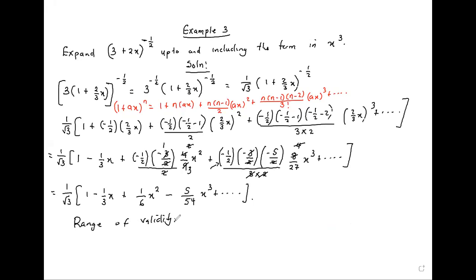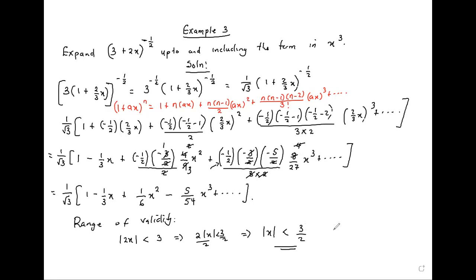For the range of validity, you would say the modulus of 2x is less than 3. That's another way of doing it if you can't force a one — as long as that three is positive, you can say the modulus of 2x is less than 3, then divide both sides by 2 to get the modulus of x is less than three over two. That's the simplified answer.